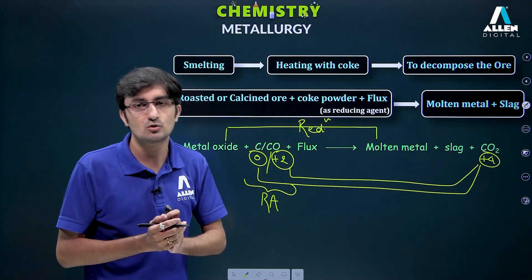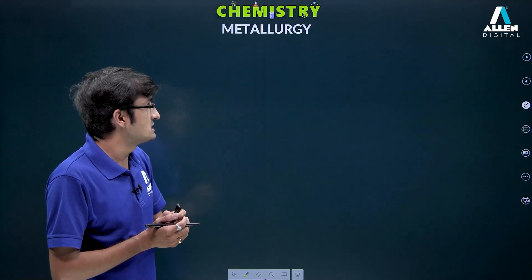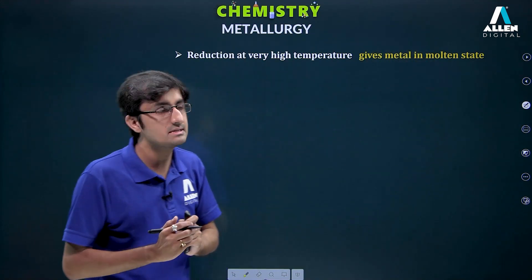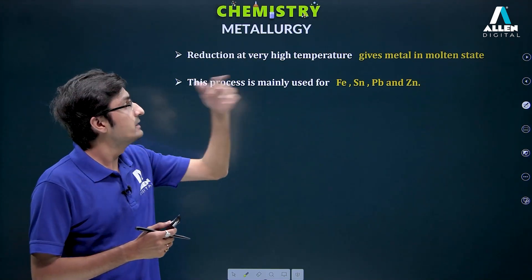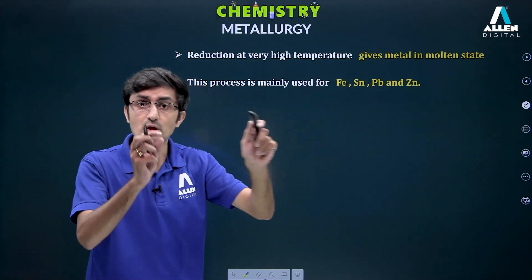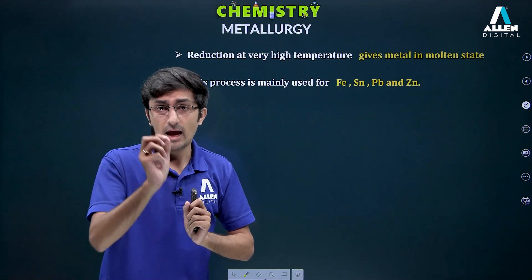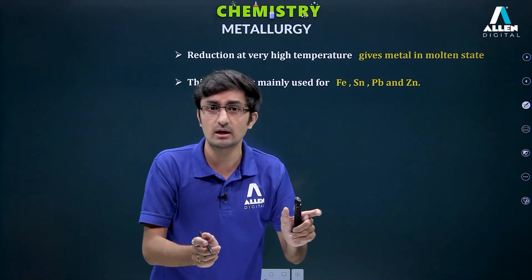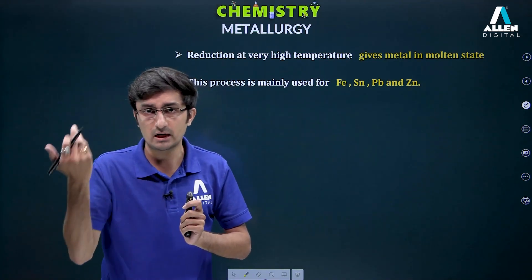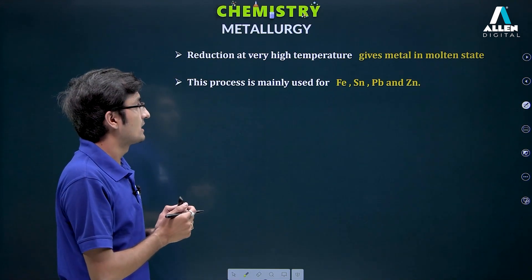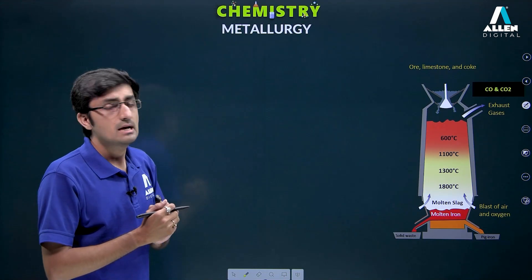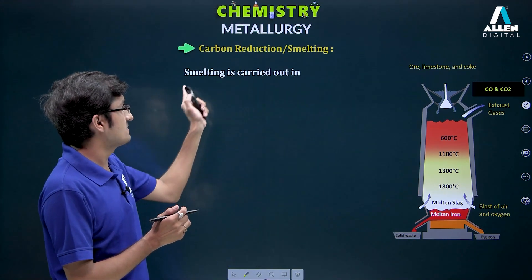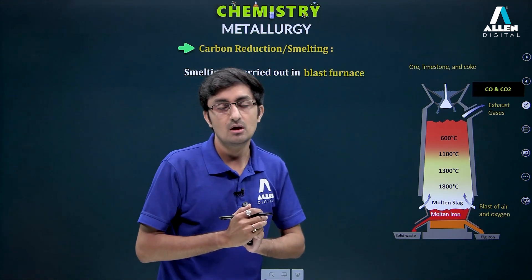If we do reduction at high temperature, the metal is naturally obtained in molten state. This process is mainly for iron, tin, lead, and zinc. You should remember which process is used for which element, as competitive exam questions often ask you to match elements with processes. Smelting is carried out in a blast furnace.